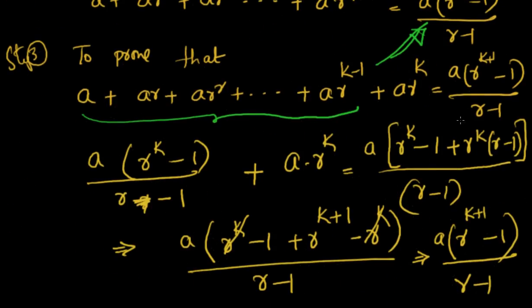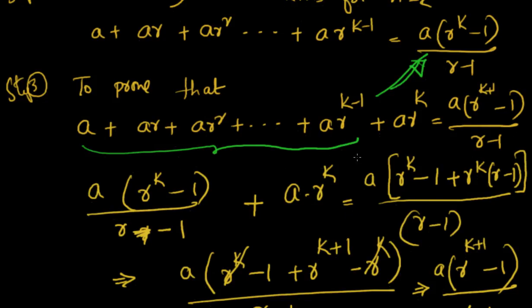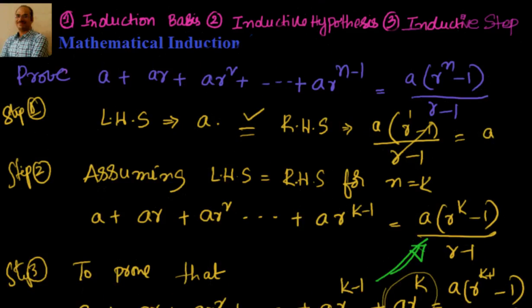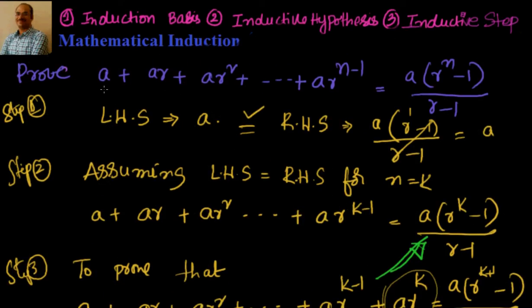So we have proven LHS is equal to RHS for n equal to k plus 1. We leveraged what we assumed for n equal to k — that the sum of k terms equals the RHS — substituted that, added the k plus 1th term, and on simplification we arrived at the RHS. We have proven that the sum of the geometric series a plus ar plus ar squared, up to ar to the power of n minus 1, equals a into r to the power of n minus 1, by r minus 1. We will solve some more examples. See you in the next video. Thanks for visiting.